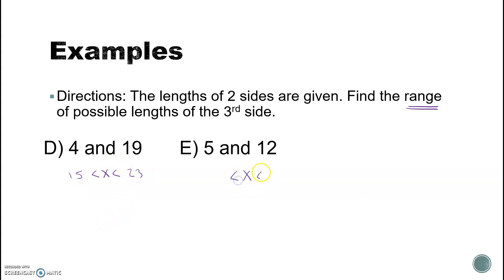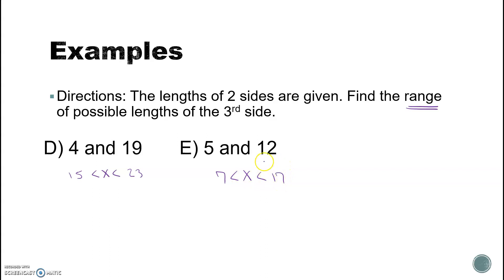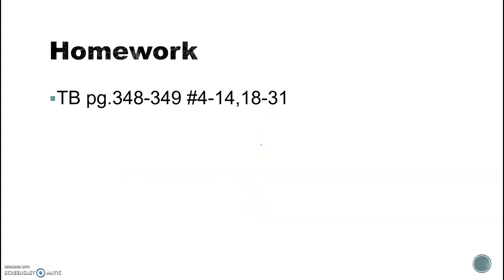Same concept: for sides 12 and 5, subtract to get the lower limit — twelve minus five is seven — so the third side must be bigger than seven. Add to get the upper limit — twelve plus five is seventeen — so it must be less than seventeen. The third side must be between 7 and 17; for example, 7.1 works and 16.9 works, but you can't use 7 or 17.